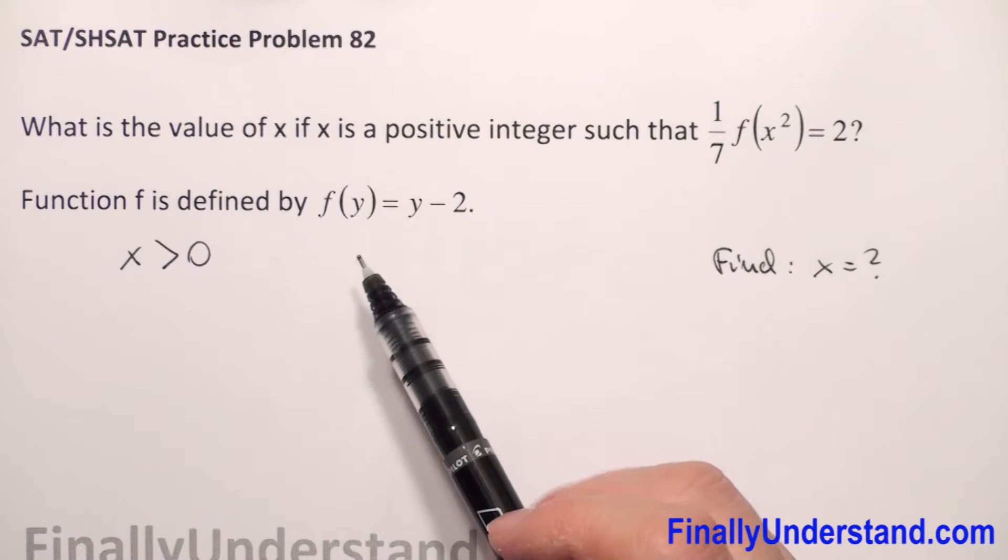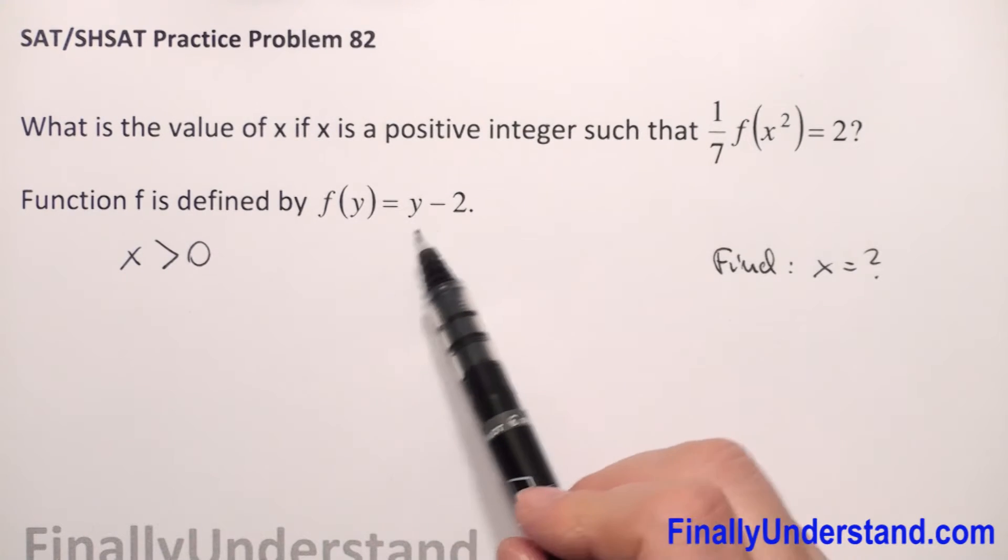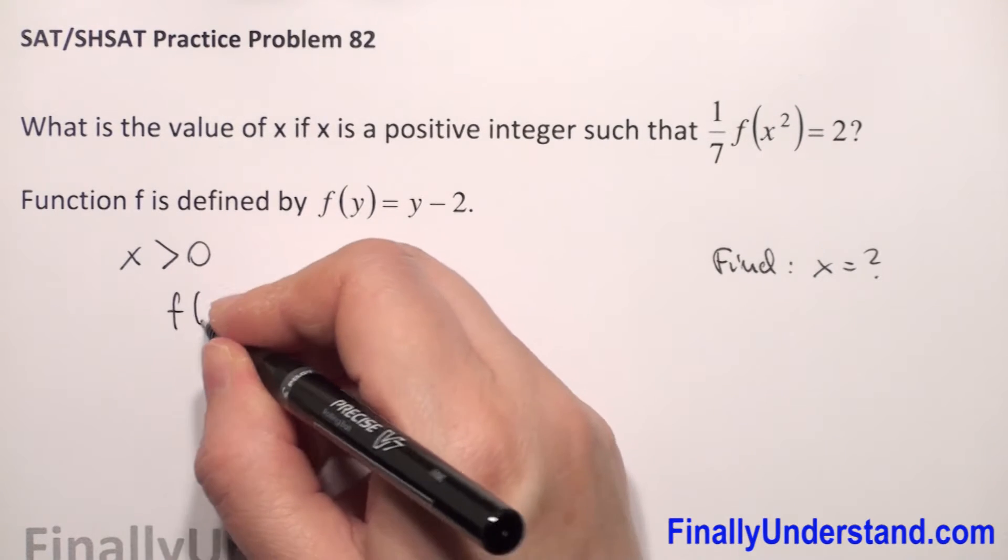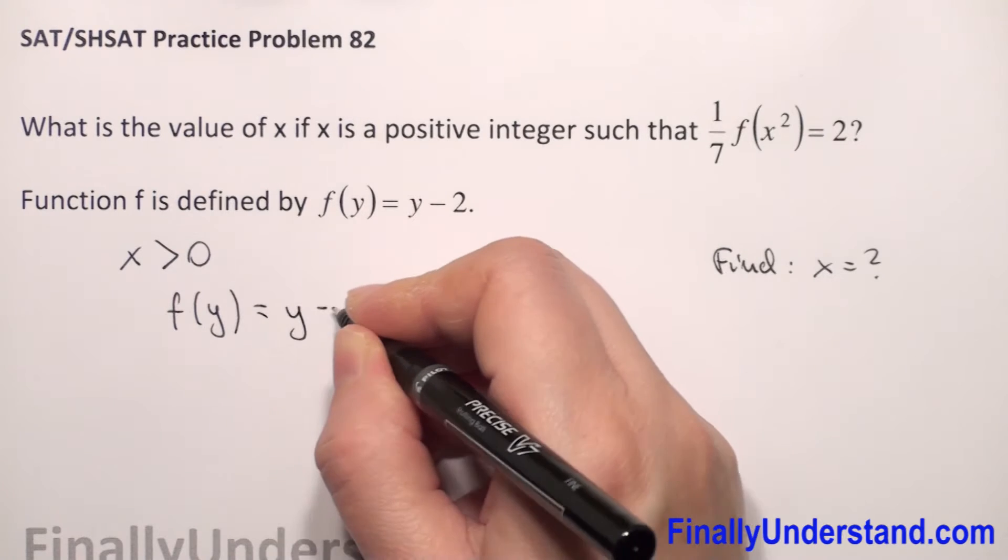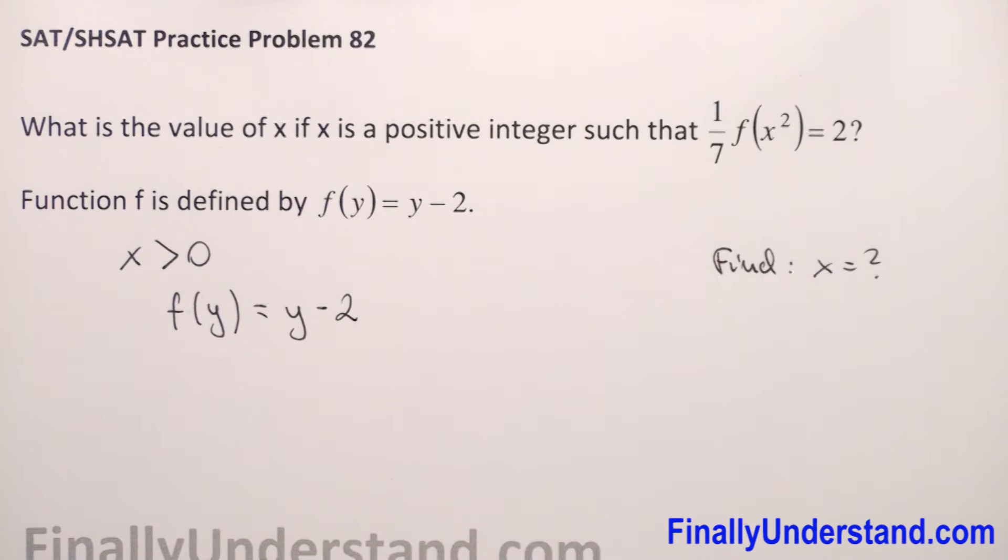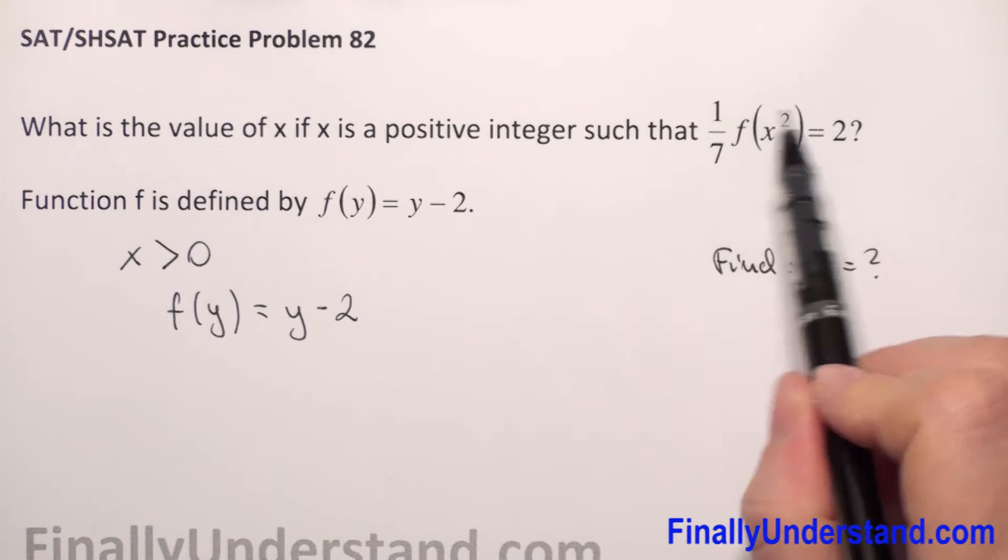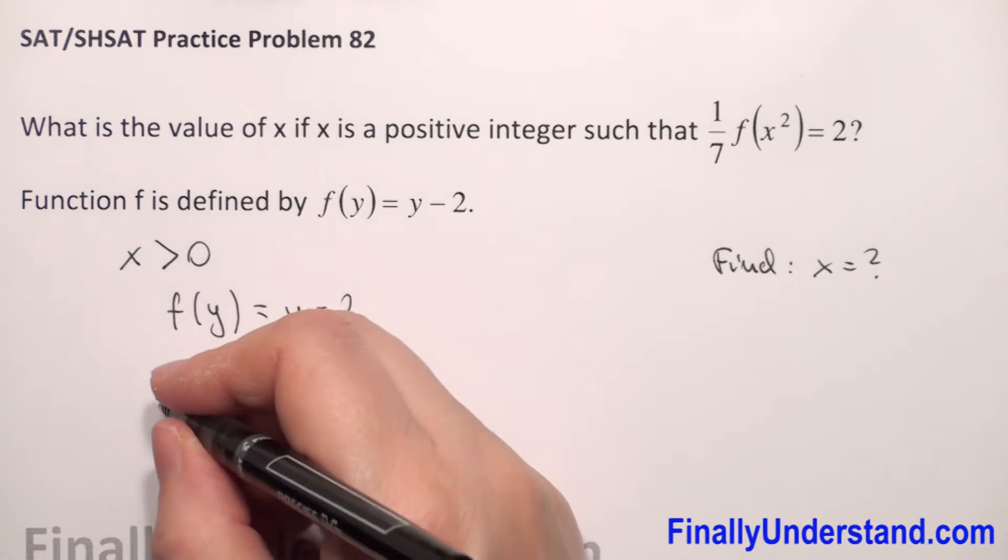So let's start from our given function. We have that f of y equals y minus 2. This is given. Our function f is defined by this formula and we have x only in this equation so we have to copy this equation.